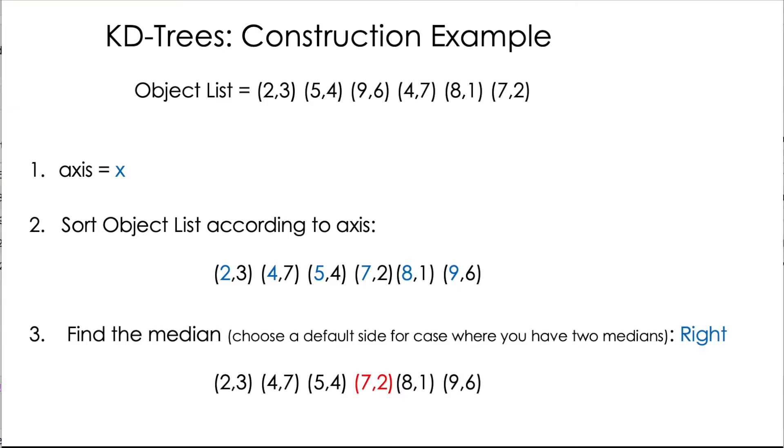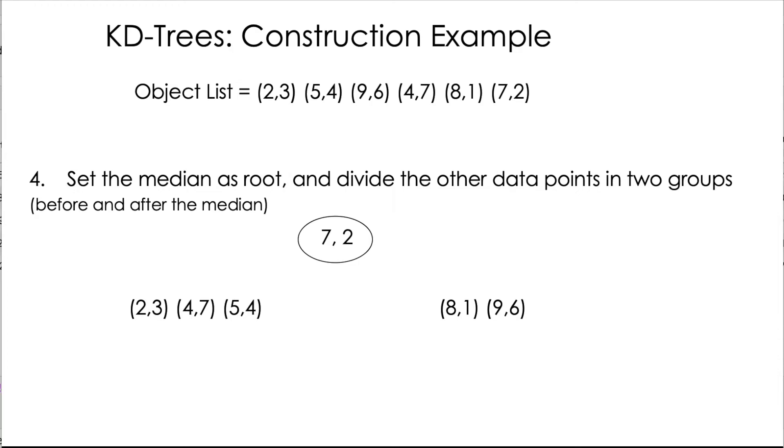And third is to find the median of that list. So sometimes we don't actually have a median because we have a pair number of points, like in this case where we have six data points. So we have actually two medians. So in general, we just need to decide at the beginning for a default case. Let's assume that by default, when we have two medians, we're going to choose the one of the right side. So in this case, it's going to be 7,2, our median. Now we set that median as root and divide our remaining data points in two groups, the ones in the left side of the median and the ones in the right side of the median.